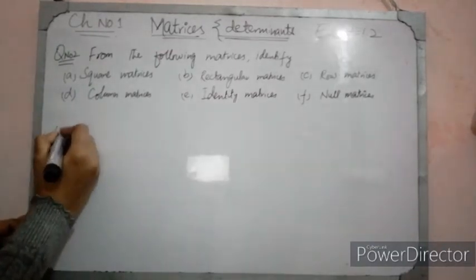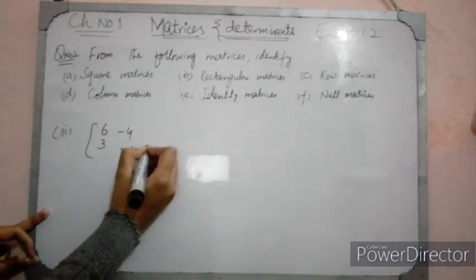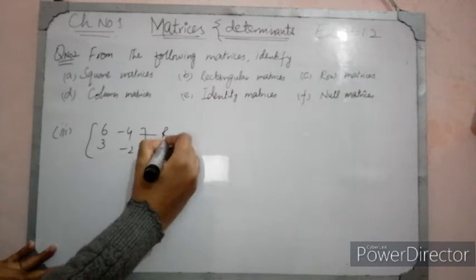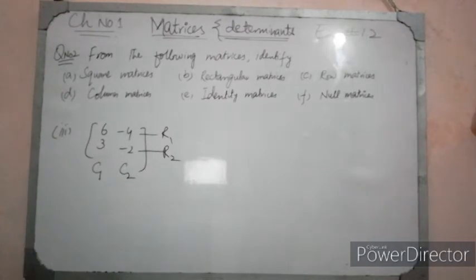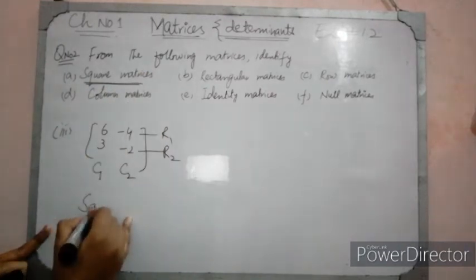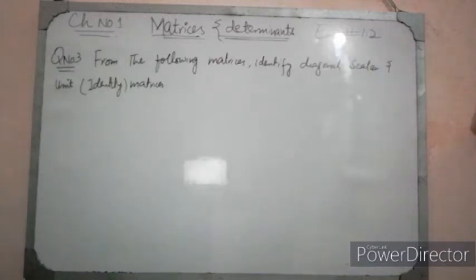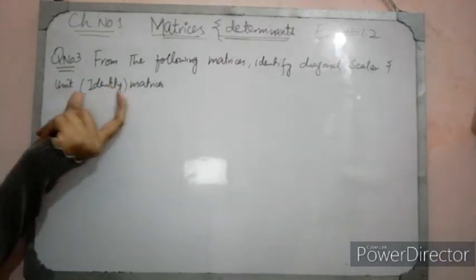Now let's do the third part. The third part has entries 6, 3, minus 4, minus 2. Looking at this matrix, the number of rows is R1 and R2 — that is 2 — and the number of columns is also 2. Since the number of rows equals the number of columns, this is a square matrix.